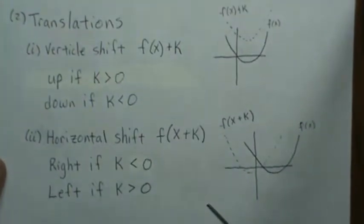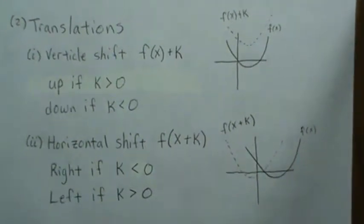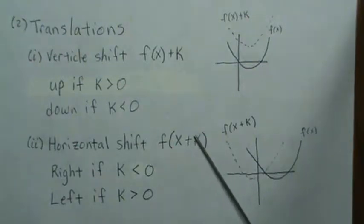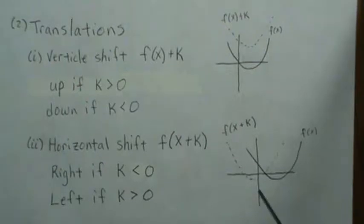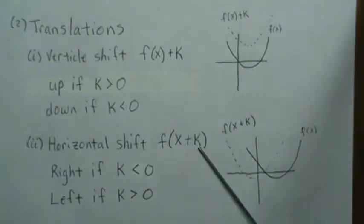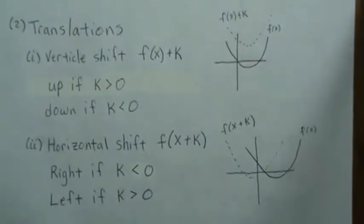Horizontal shifts move the graph left or right using f(x + k). If k is negative you move it to the right, and if k is positive it moves to the left. This is counterintuitive because negative numbers are typically left, but here negative k shifts right and positive k shifts left.